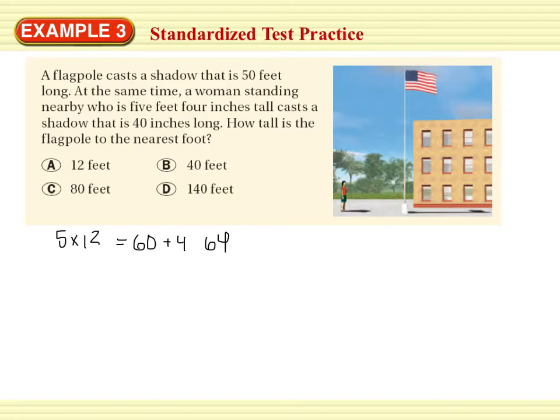A flagpole casts a shadow that is 50 feet long. At the same time, a woman standing nearby who is 5 feet 4 inches tall casts a shadow that is 40 inches long. How tall is the flagpole to the nearest foot? Something I want to point out really quick before I move into the problem is standardized tests and how to at least cancel some of the possible answers. So looking at those, the multiple choice. Notice that the woman's height is greater than her shadow's length. Her height is 64 inches. Her shadow length is 40 inches. So the flagpole must be taller than its shadow's height. Alright, so if we have 50 feet tall, if I do 50 times 12, that's 600 inches. The flagpole must be taller than its shadow length. So we're going to eliminate choices A and B because they just don't make sense.